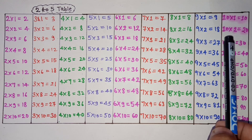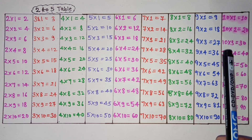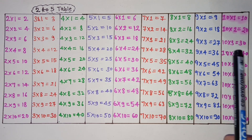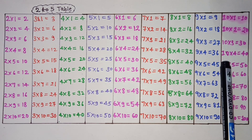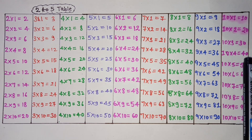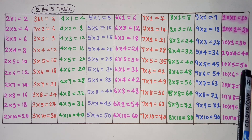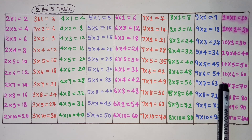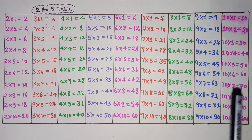10 2s are 20, 10 3s are 30, 10 4s are 40, 10 5s are 50, 10 6s are 60.